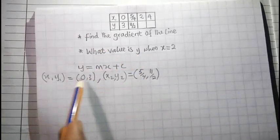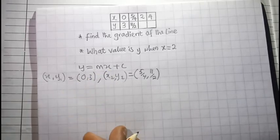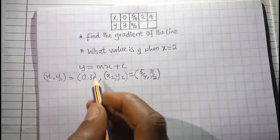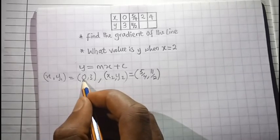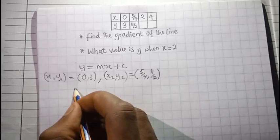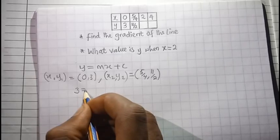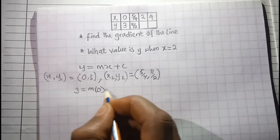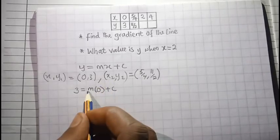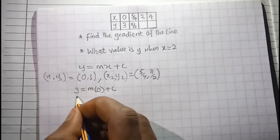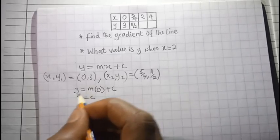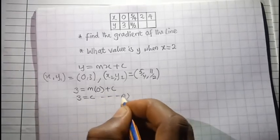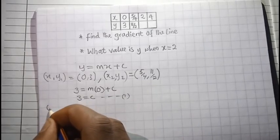We can now substitute these two coordinates into the main equation. For x1, y1 we have 0 and 3, so when y is 3, x is equal to 0. In the main equation we have 3 equal to m multiplied by 0 plus c. Since m multiplied by 0 is 0, we get 3 equal to c. So the value of c is equal to 3 — this is equation number 1.